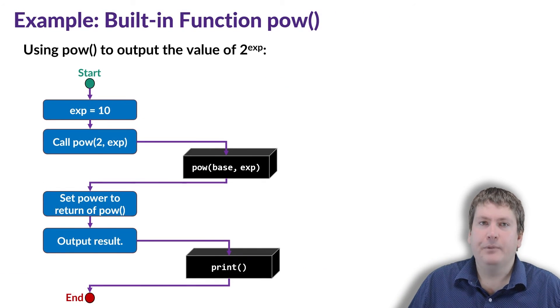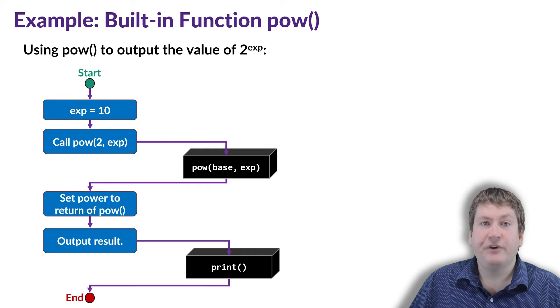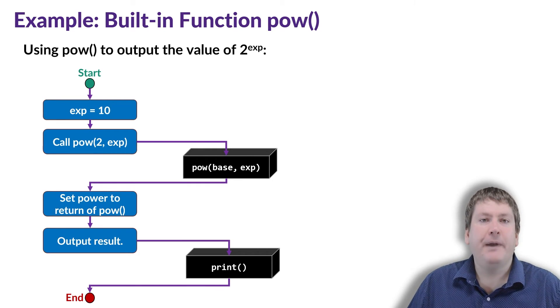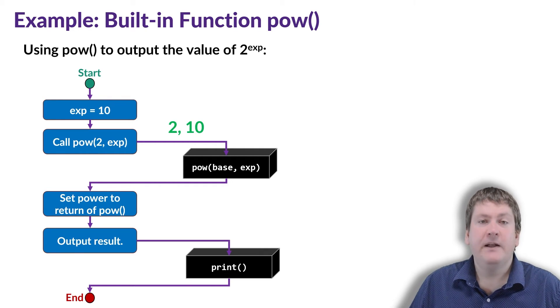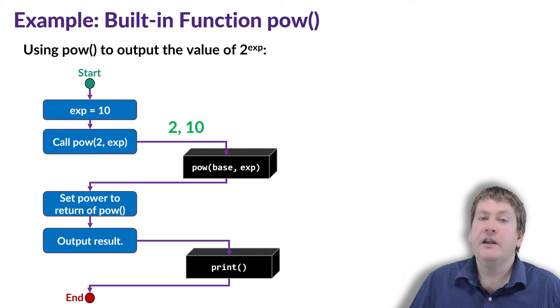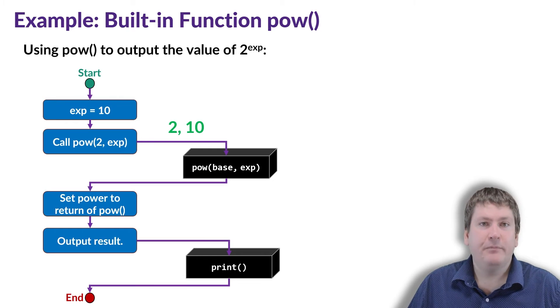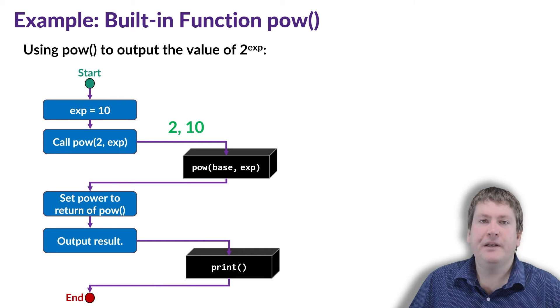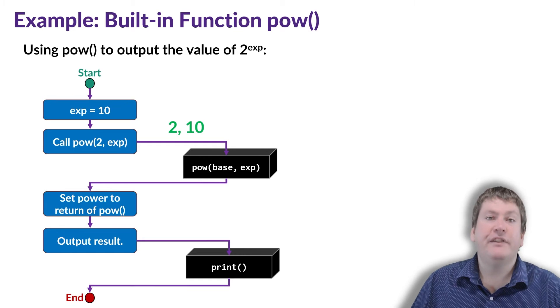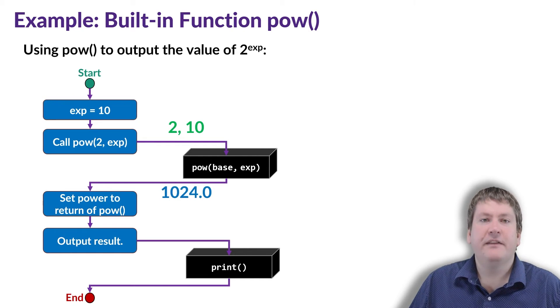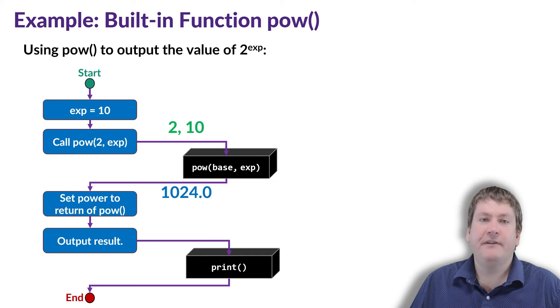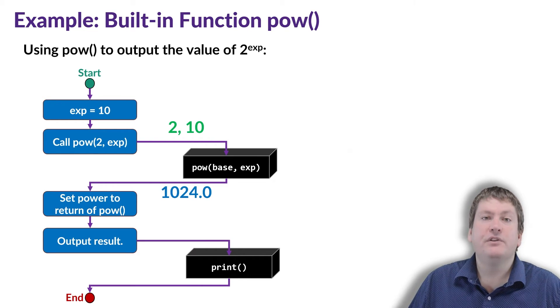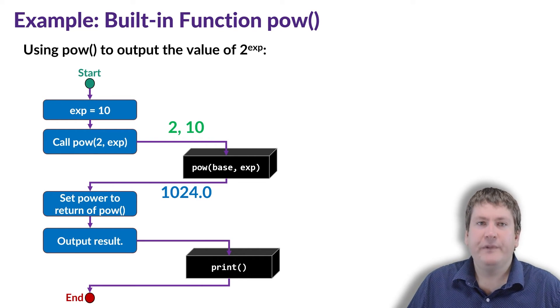Let's take a look at that pow example again and see what the arguments and returns are. So when we call the pow function, we might send it values like 2 and 10. These are the arguments. So 2 would be the argument for the base parameter, and 10 would be the argument for the exp parameter. The pow function then returns a result. In this case, that's 1024. And then we set the value of the variable power equal to the result of the pow function. So then power would be equal to 1024.